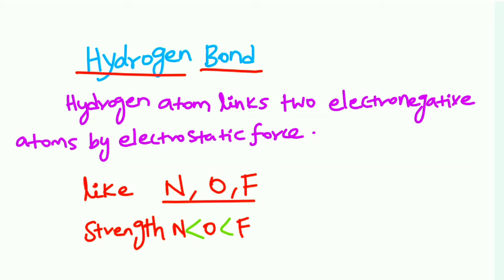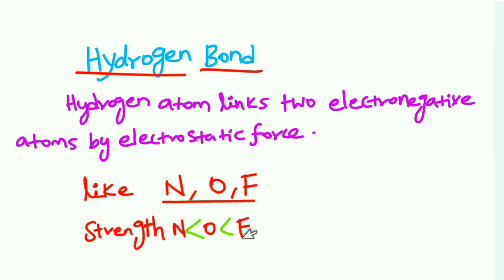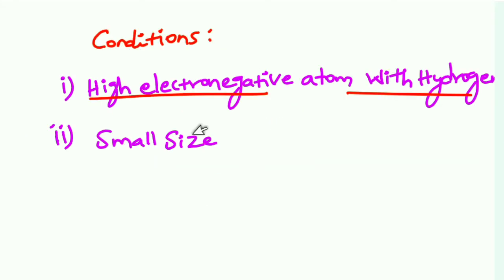Nitrogen has higher electronegativity. So that determines the strength of the hydrogen bond. Conditions of hydrogen bonds: electrons and hydrogen bond.